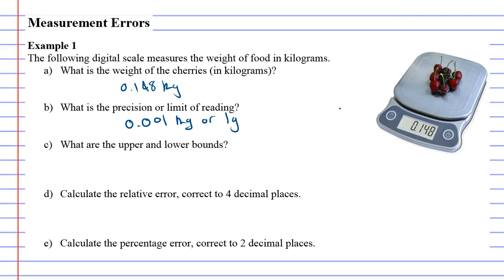Now what we're going to do, I'm going to do this in green and we're going to explore what happens. We're going to explore different numbers or different weights that the cherries could be. And in all honesty, the cherries could be 0.1481 kilograms. It's quite possible that they weigh that much because this instrument would have rounded that to 0.148. What are some other weights that would have rounded to 0.148?